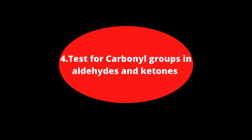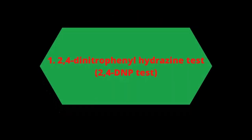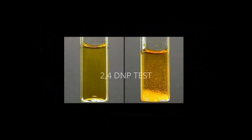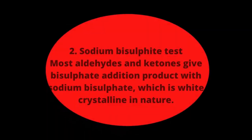The carbonyl group can be tested using the 2,4-DNP (2,4-dinitrophenylhydrazine) test. This test is used for carbonyl groups present in aldehydes and ketones. The 2,4-DNP reagent gives a yellow color precipitate with carbonyl compounds.